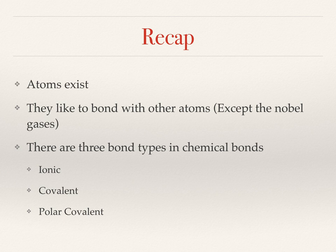So the quick recap: atoms exist and they like to bond with other atoms. The bonds between atoms take one of three forms — they're either ionic, covalent, or polar covalent. We're specifically not mentioning bonds between molecules here, so we're not going to talk about hydrogen bonding or similar. We're only looking at the actual bonds between atoms.